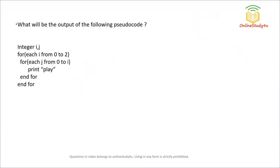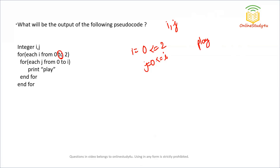Next question: what will be the output of the following pseudo code? We have two integers I and A. We take one outer loop from I equal to 0 to less than or equal to 2, and an inner loop for each J from J equal to 0 up to less than or equal to I. When I is 0: J goes 0 to 0, so 'play' is printed once. Then J becomes 1, condition fails, exit inner loop.